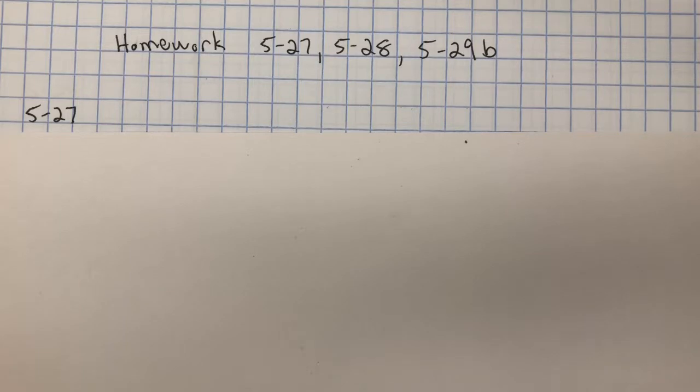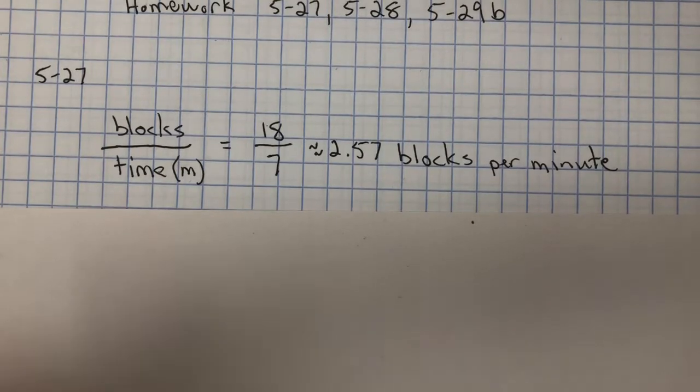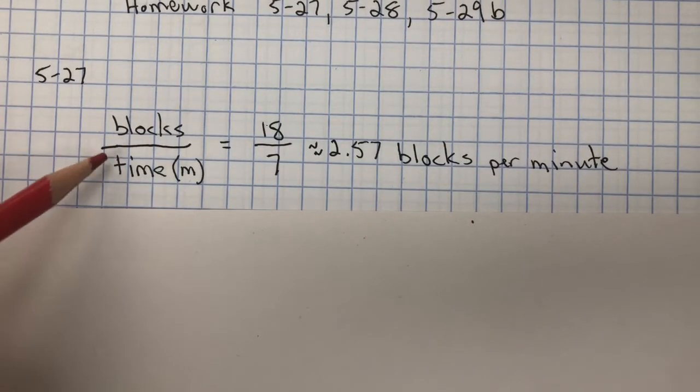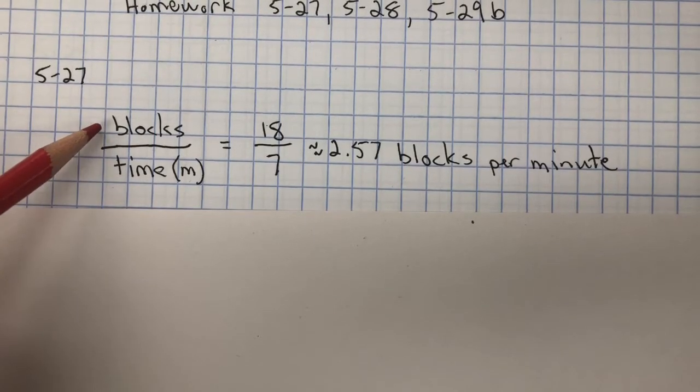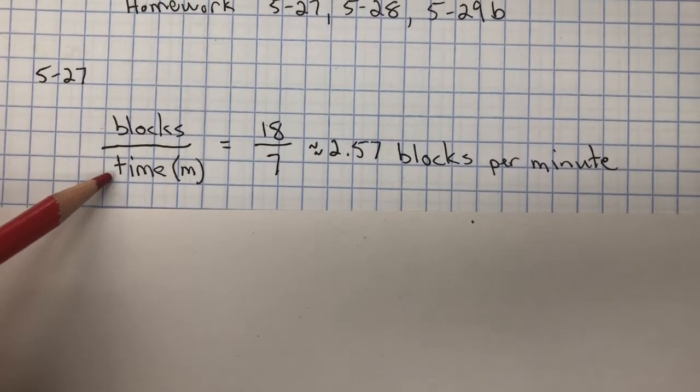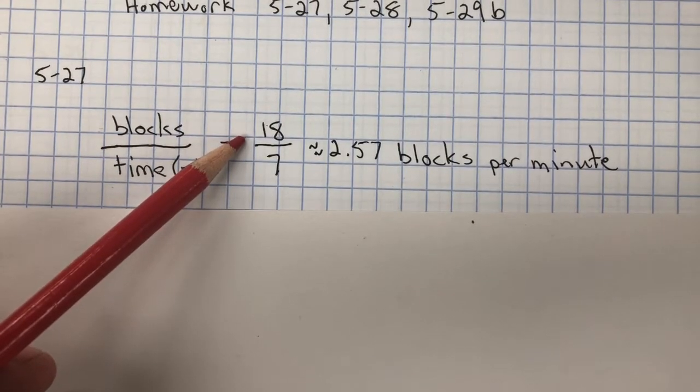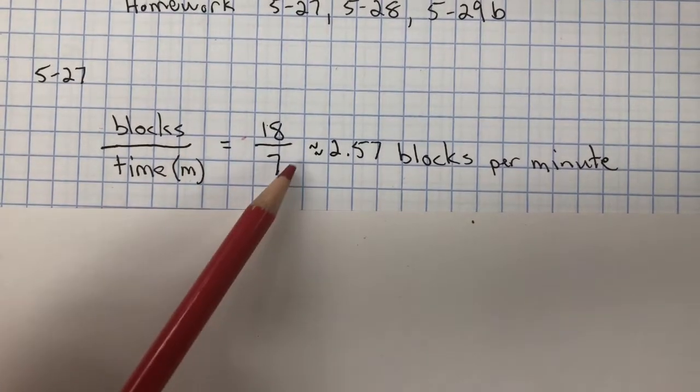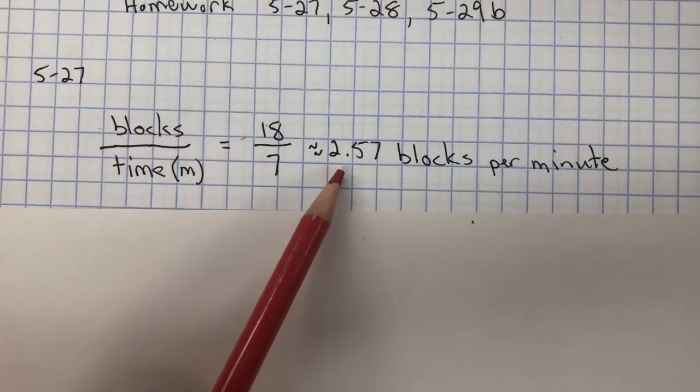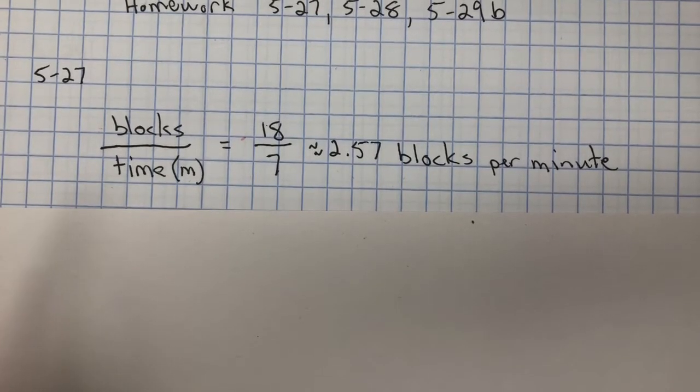Elaine takes 7 minutes to ride 18 blocks. So we want to set it up as a ratio: blocks over time, the dependent over the independent. 18 blocks for 7 minutes. And that is approximately 2.57 blocks per minute. So that's the unit rate.